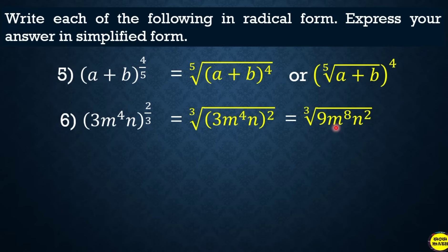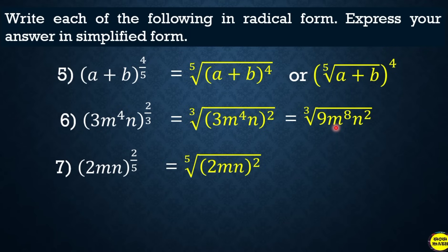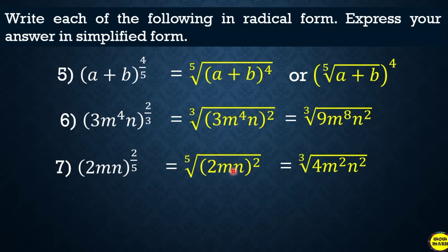Another example: 2mn raised to 2 over 5, or the fifth root of 2mn squared. This can also be simplified: 2 squared is 4, m's exponent 1 times 2 gives m squared, and n's exponent 1 times 2 gives n squared. Therefore the final answer is the fifth root of 4m squared n squared.